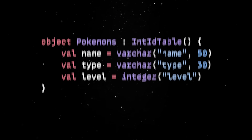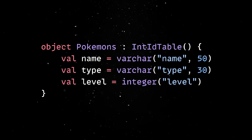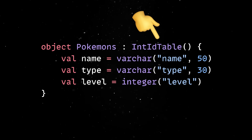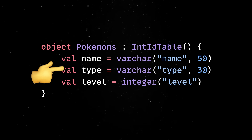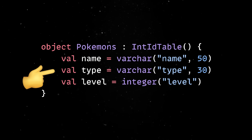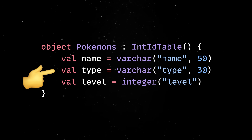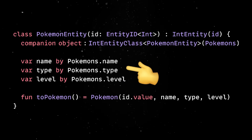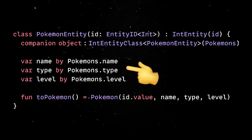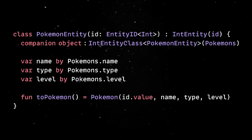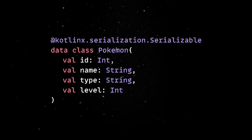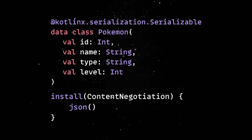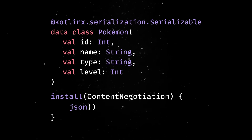The actual schema can be defined using plain Kotlin objects, so let's declare a table with an auto-incrementing integer ID, a name column, a type column, and a level column. We'll also need a data access class which maps database rows to our Kotlin objects. And let's also create a DTO that allows us to safely send and receive data as JSON over HTTP.